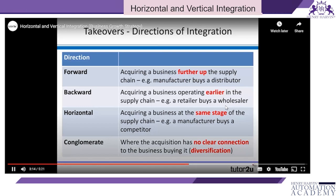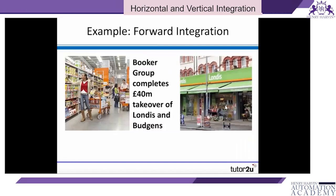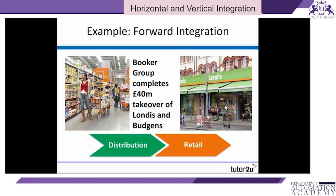Let's look at some examples. Forward integration: in 2016, the Booker Group, one of the UK's largest wholesalers running large wholesale operations serving mainly small retailers, agreed a takeover of a large chain of convenience stores — Londis and Budgens — over 2,000 stores. That was an example of a distributor acquiring a retailer, moving forward up the supply chain.